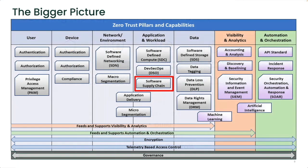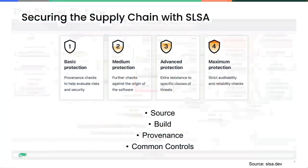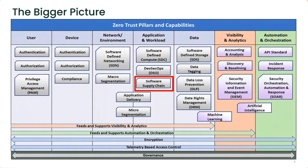For Rancher, we currently have a proof of concept in the works, working on improvements to the build service and provenance. On the Linux side of the house, a gap assessment has been done and they're very close to level four because of their Common Criteria EAL 4-plus certification and build requirements. The bigger picture: the hefty requirements of supply chain are only a small part of the zero trust pillars and capabilities. Glenn, I'm going to turn it over to you.